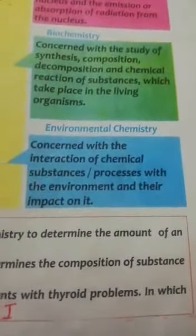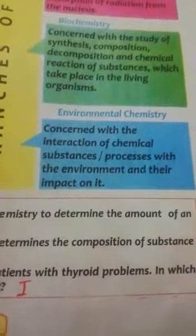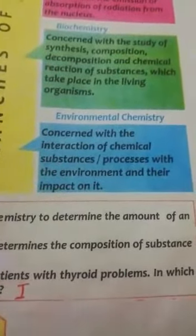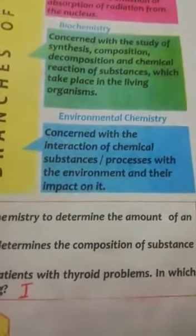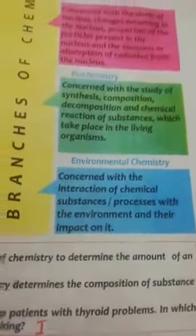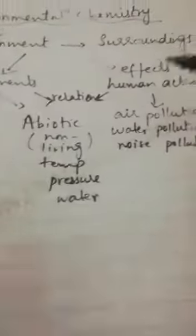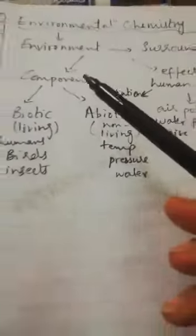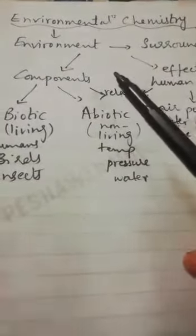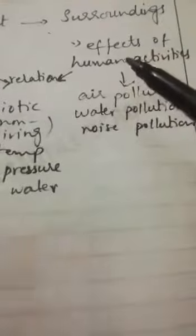Now we move to the last branch, which is environmental chemistry. It is concerned with the interaction of chemical substances or processes with the environment and their impact on it. The word comes from 'environment,' which is our surroundings. Our environment is basically composed of two main things: its components, which are either biotic or abiotic, and the effects of human activities.